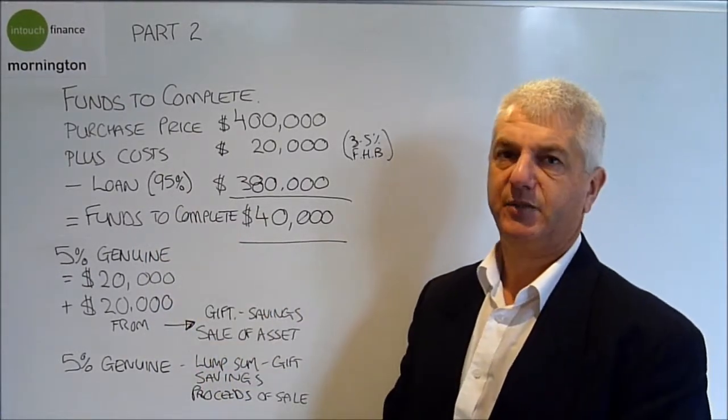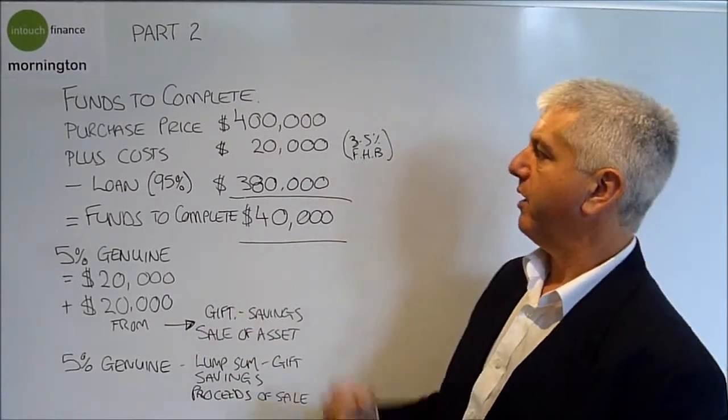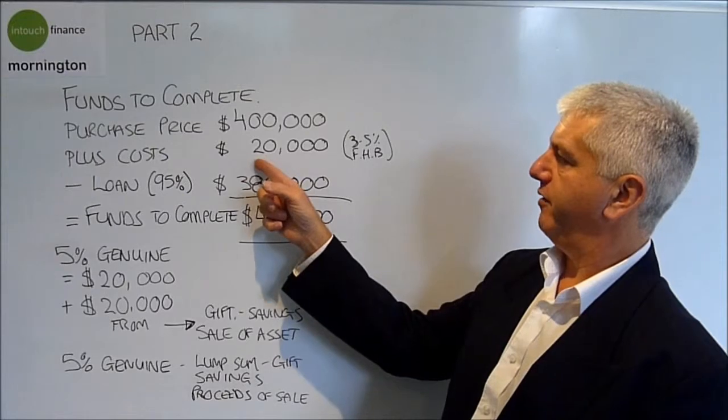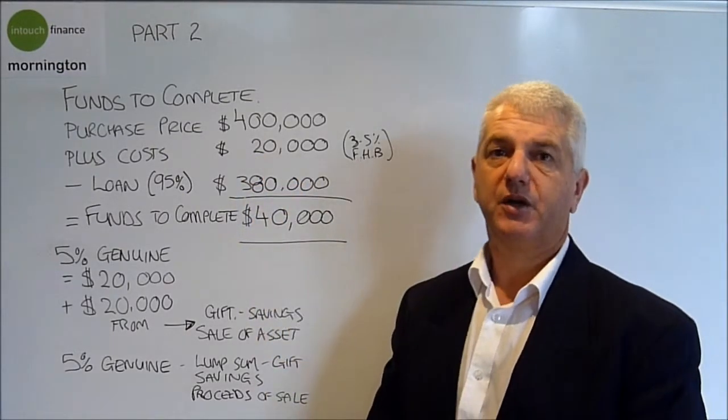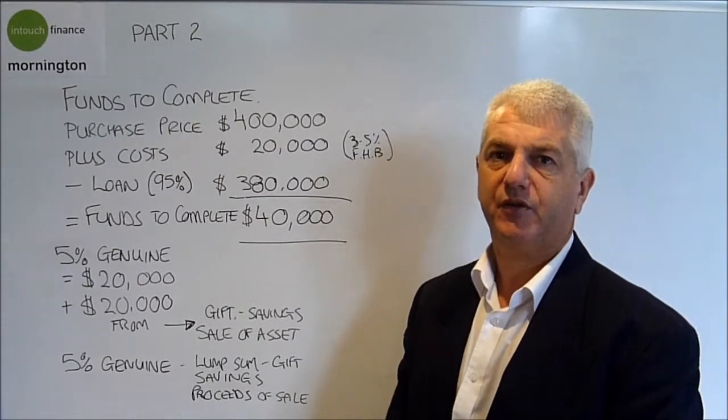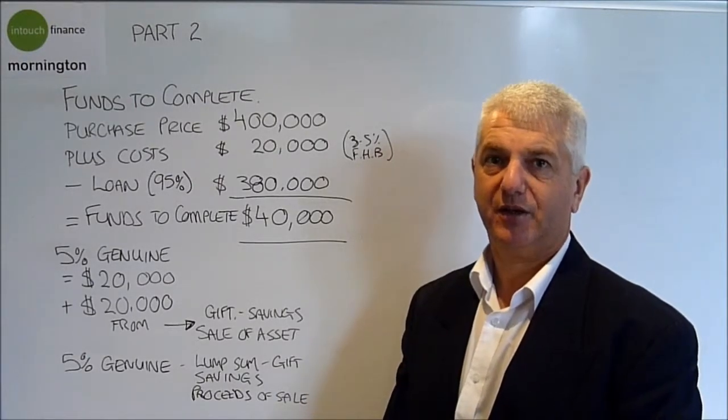Of that, 5% has to be genuine, the other 5% can come from everywhere. If you are a first home buyer, that figure is going to reduce around $13,000 to $14,000. So I hope that makes sense. If you've got any particular examples you'd like me to calculate, please ask. Thank you.